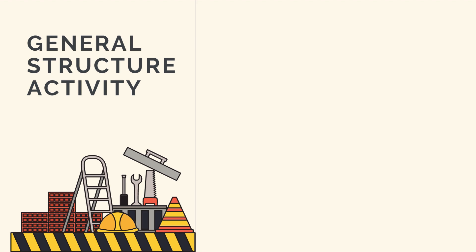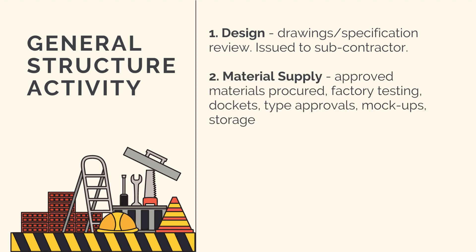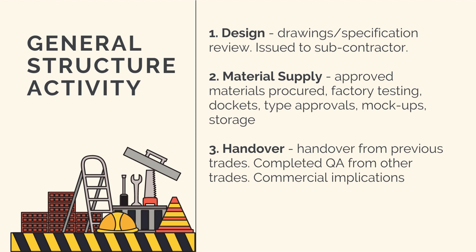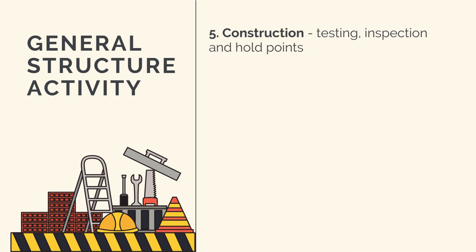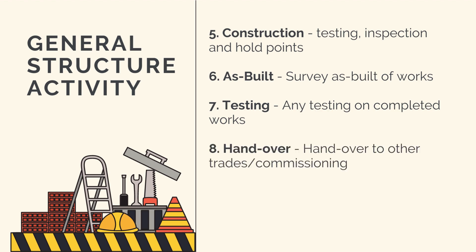All construction activities have the same general sequence. Number one is issuing our design to the crew — a check to ensure the correct revision of drawings and specifications have been issued, including any relevant design changes. Number two is material supply — ensuring approved materials are being used, factory testing is completed, and any relevant mock-ups or samples are okay and stored correctly. Number three is the handover from previous trades, and the subcontractor or work crew is ready to take possession of the site — this has commercial implications and is an important step. Number four is the survey set out and dimensional checks to ensure the work location is correct. Five is the actual construction activity itself, including any testing, inspection and hold points. Once the works are complete, number six is the survey pickup and as-building, followed by seven, which is any testing on the completed works. Then eight will be the activity closeout and handover to the subsequent trades or commissioning.